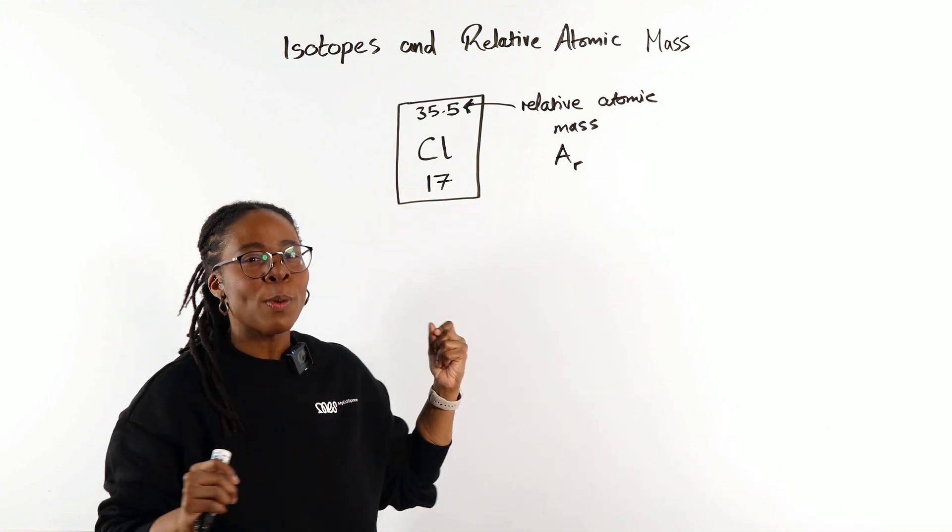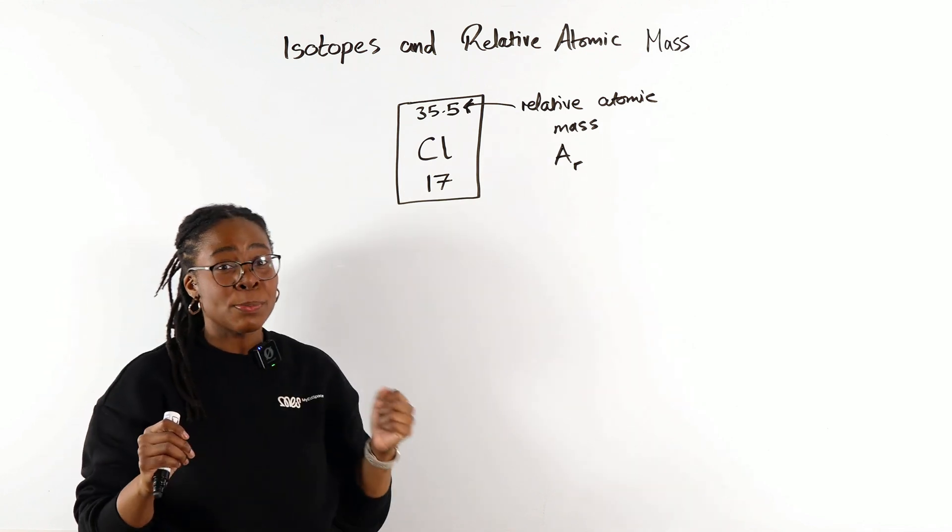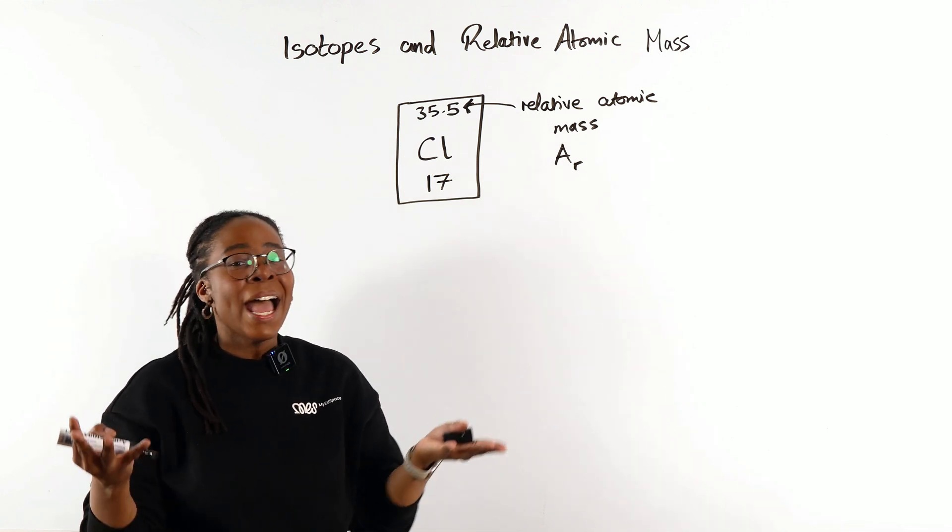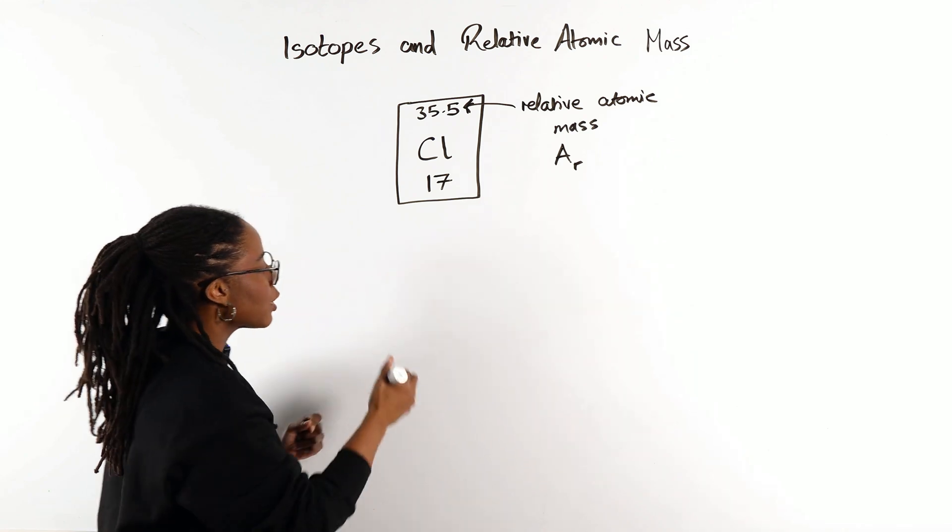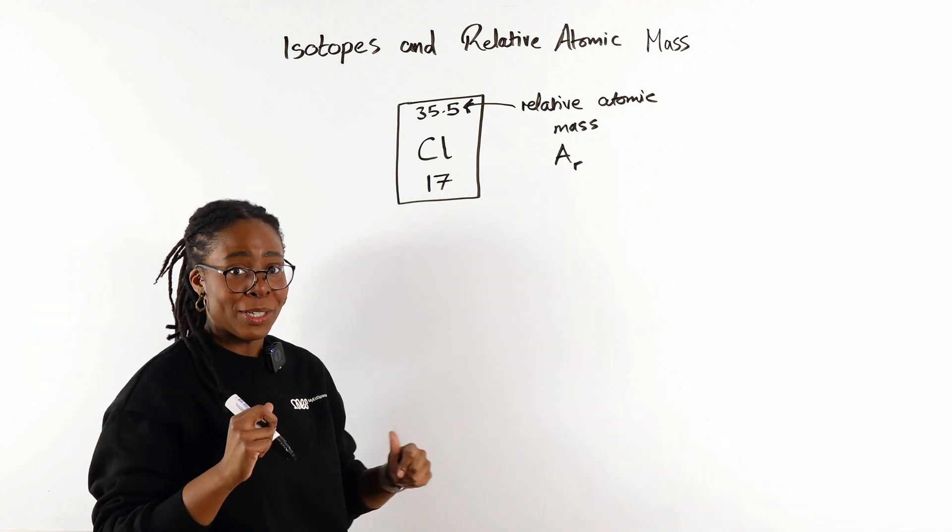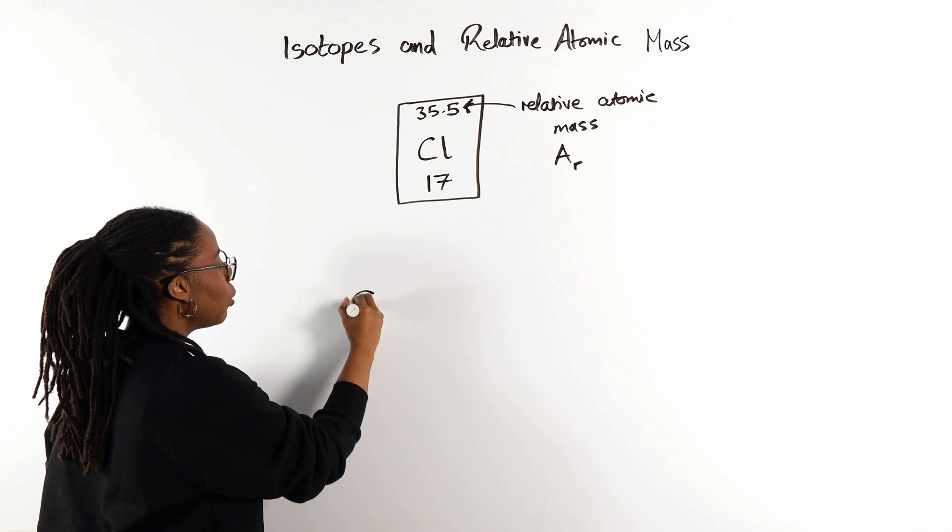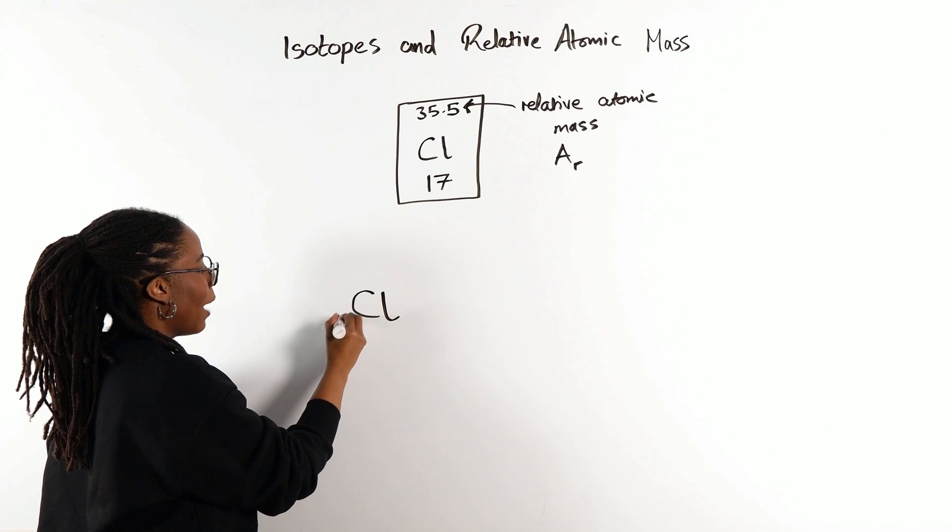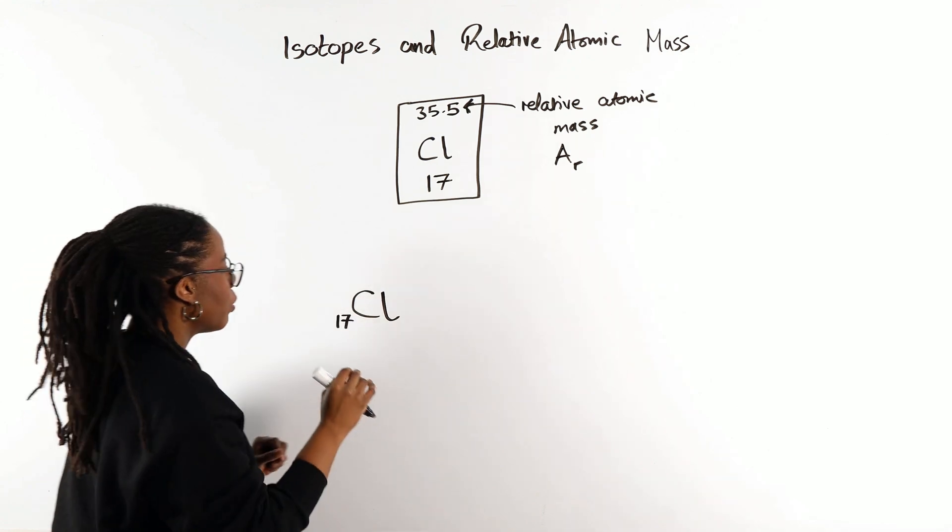So the relative atomic mass, let's talk about what that actually means. The reason that we end up with a decimal is because chlorine atoms actually exist in multiple forms. If we think back to our atomic notation that we looked at in my last video, so make sure that you go back and watch that one, the chlorine can have, will have an atomic number of 17.